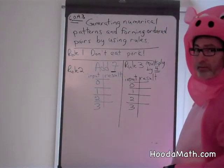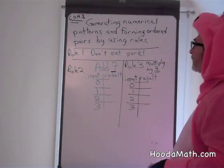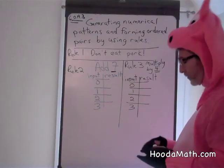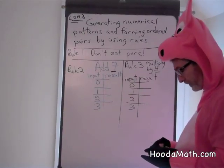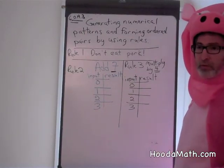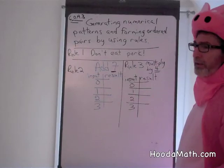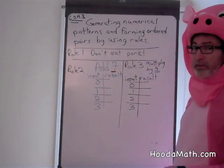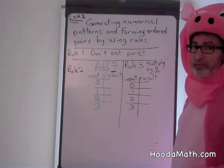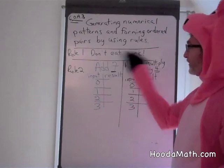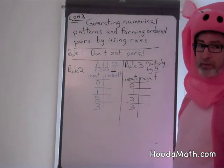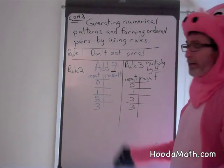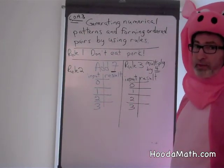Generating numerical patterns and forming ordered pairs by using rules. There are lots of rules — we have rules like don't run into the street, or a very important rule like don't eat pork. But these are mathematical rules we're talking about.